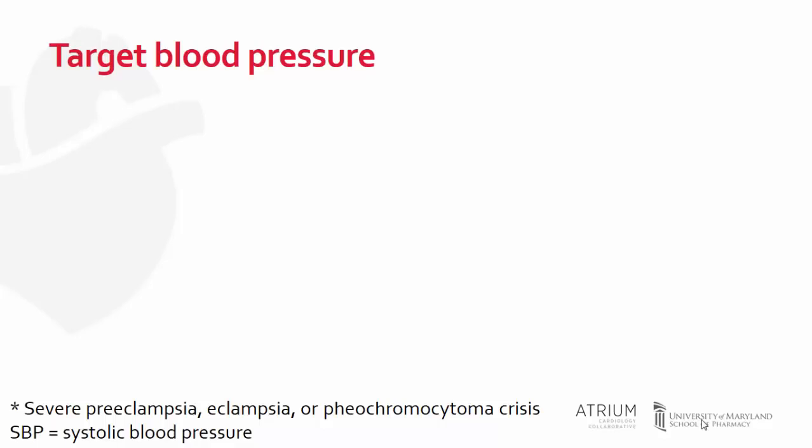When encountering a patient presenting with a hypertensive emergency, it is important to identify the blood pressure goal early on in the patient's management. The importance of doing this is to prevent further progression of end organ damage and also to prevent unwarranted consequences with too rapid correction of blood pressure.